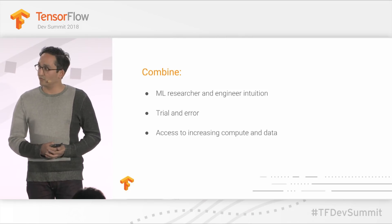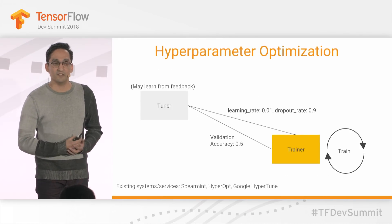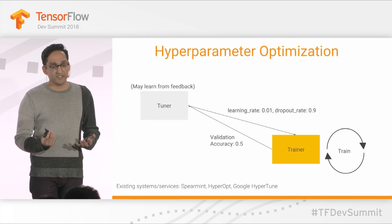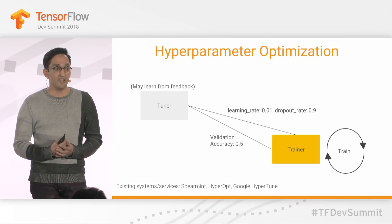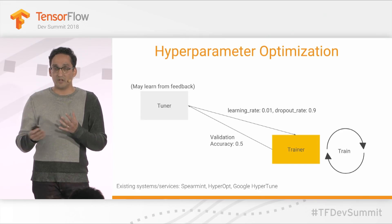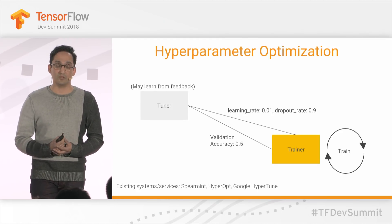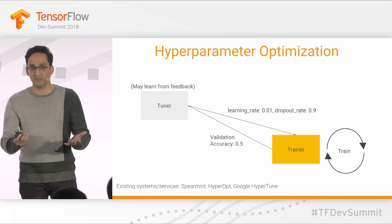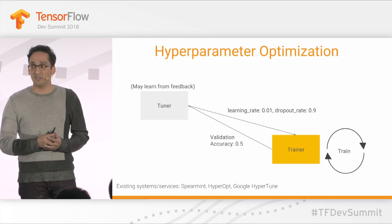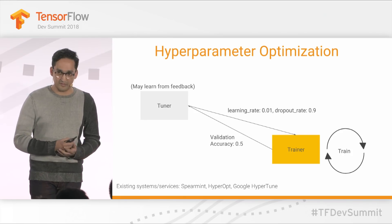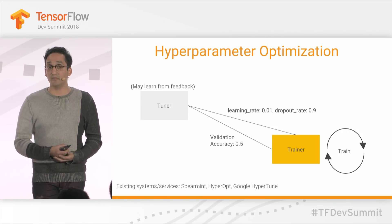This combination is really ripe for automation, and not surprisingly, this exists today — it's called hyperparameter optimization. In this setup, we have a tuner that gives out hyperparameter settings, a trainer that trains our model on a dataset and returns a validation accuracy signal, and the tuner learns from this feedback to find better points from the search space. There are existing systems that can help you do this.